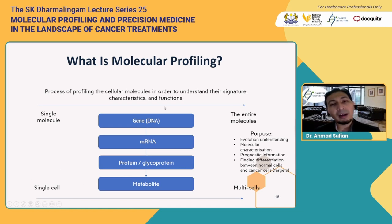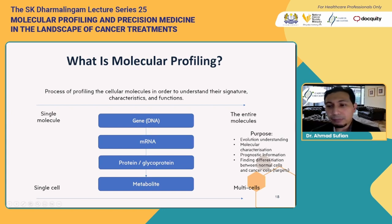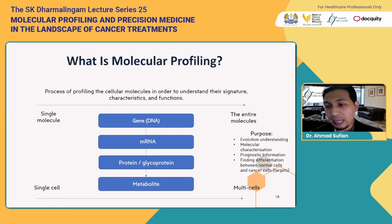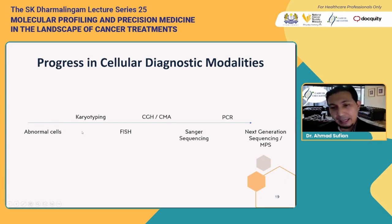With molecular profiling we can profile a single cell right through to multiple cells. The reasons we profile include: to understand the evolution of cancer cells, for molecular characterization, for prognostic information, and for finding differentiation between normal cells and cancer cells so we can target the cancer cells. If we look at the development of cellular diagnostic modalities, initially we could see cells under the microscope, then examine karyotypes and chromosomal microarrays.